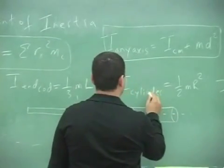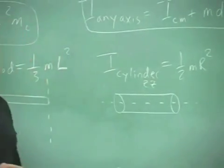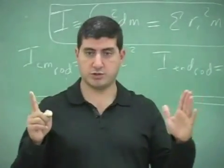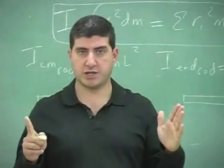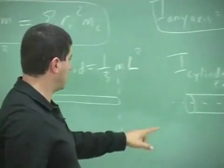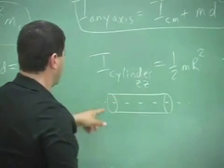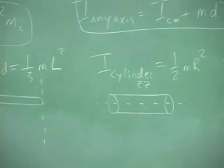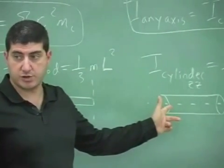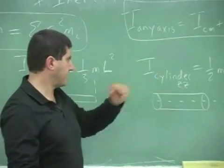For the cylinder, we can call this I-ZZ. The book gives this to you in a table in chapter 10, and they give you all the moments of inertia. They have the picture vertical with the axis going through the center. This is typically the axis that the cylinder rolls around when you have it rolling. So it's half mR squared.